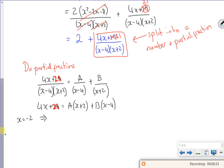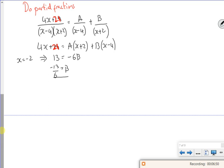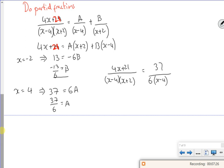That's 21. Right, so I'm putting minus 2, so it's minus 8 plus 21 is 13. A goes minus 2, so you've got minus 6, so B is minus 13 over 6. And then what else am I going to use? So I'm going to use x is 4. So I've got 4 times 4 is 16, I've got 21, it's 37. Then I've got 6A. So I've got 37 over 6 is A.